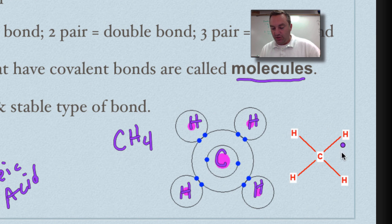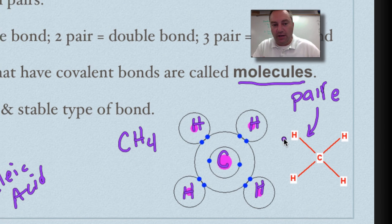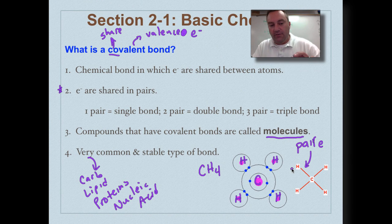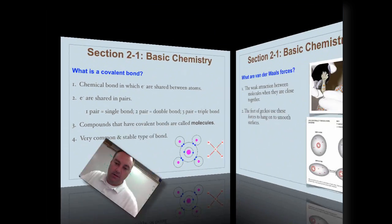Another way that you can write methane is by using this diagram where you just use the dashes. Where this dash equals one pair of electrons. So, one pair of electrons is represented by this dash. So, two, four, six, eight. And between these two, it's just two because that makes hydrogen happy. Hope that all makes sense to you. Pretty basic stuff. If you need to pause and rewind, don't hesitate to do so.